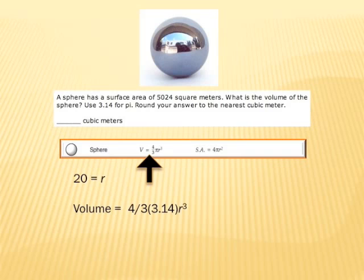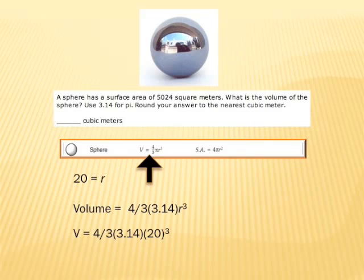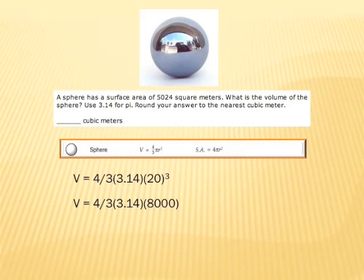Now that we have the radius, we have everything we need to find the volume of the sphere. The volume is 4/3 times pi times the radius cubed, or radius to the third power. We know the radius is 20, so we plug in 20 in place of the radius: 4/3 times 3.14 times 20 to the third power. Using order of operations, we take 20 to the third power first, which gives us 8,000.